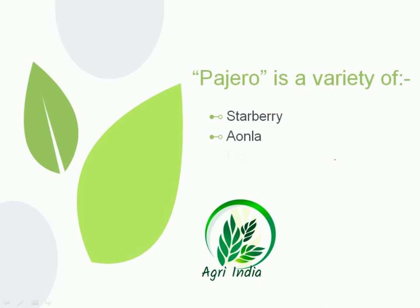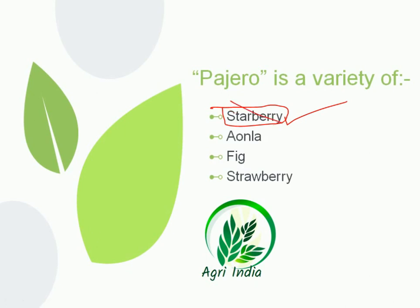Next question: Pajero is a variety of — options are strawberry, gooseberry, fig, and another option. At first glance students might pick the wrong option, but Pajero is a variety of strawberry. Hence strawberry is the correct option.